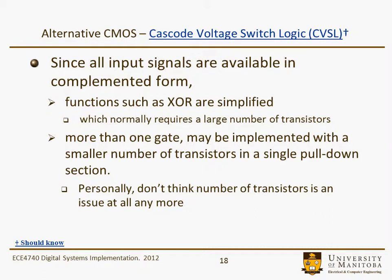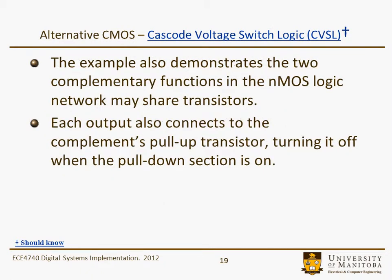More than one gate may be implemented with a smaller number of transistors in a single pull-down section. I don't really know if the number of transistors is much of an issue anymore, but that's one of the benefits of this logic family. The example demonstrates two complementary functions in the NMOS logic, and some of them in this particular block happen to share transistors. Some synthesis techniques would have been used to reduce the number of transistors in that block.